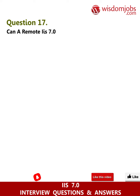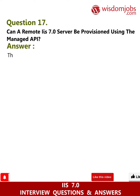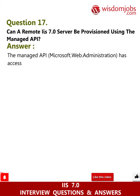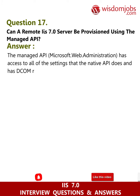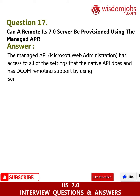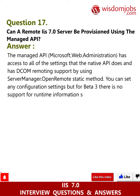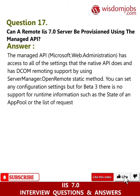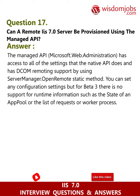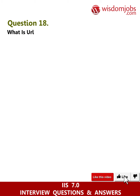Question 17: Can a remote IIS 7.0 server be provisioned using the managed API? Answer: The managed API, Microsoft.Web.Administration, has access to all of the settings that the native API does and has DCOM remoting support. By using ServerManager.OpenRemote static method, you can set any configuration settings, but for Beta 3 there is no support for runtime information such as the state of an app pool, the list of requests, or worker processes.